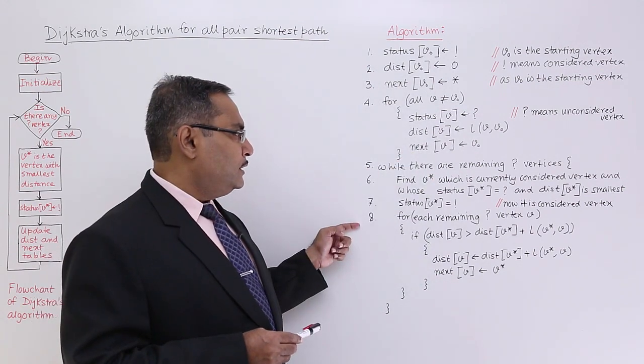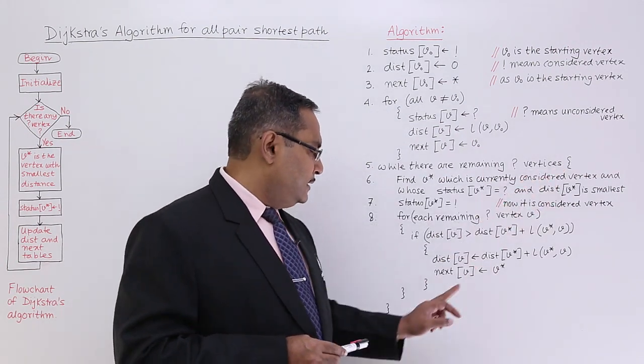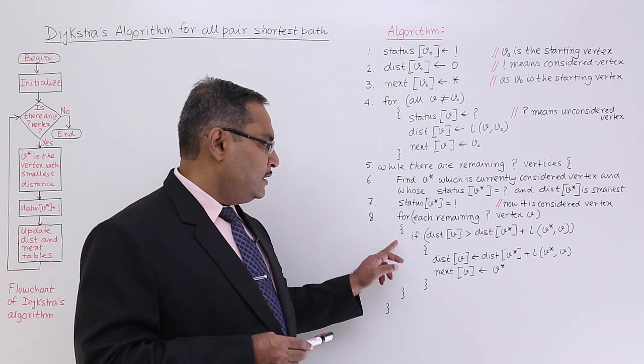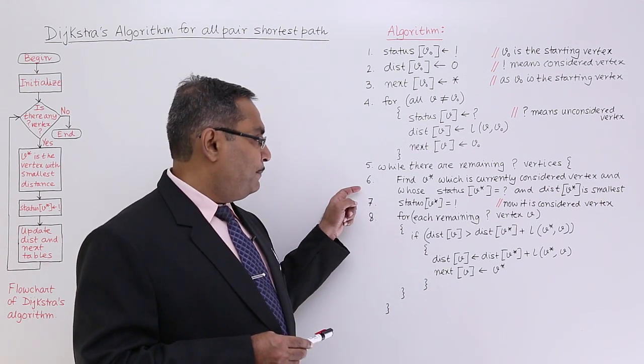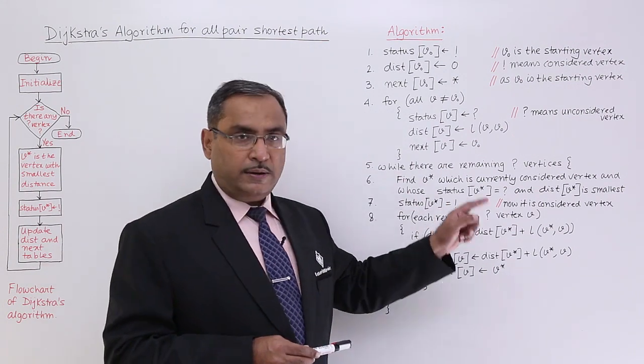Next we are going for this step number 5. Just look at here, this is the opening brace, this is the closing brace, this is the closing brace for this if and this is the closing brace for this for. That means step number 6, 7, 8 are under this particular while statement.